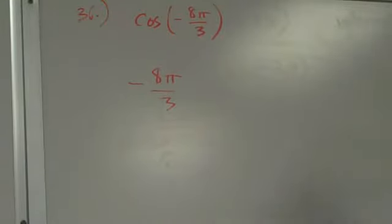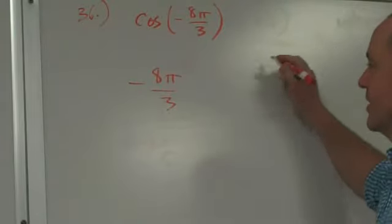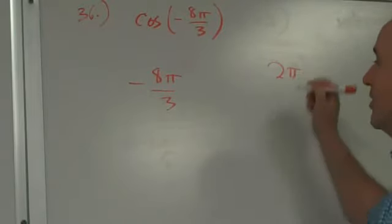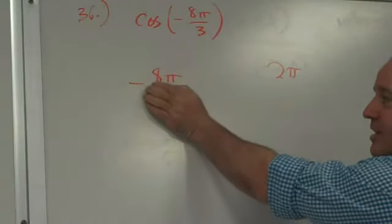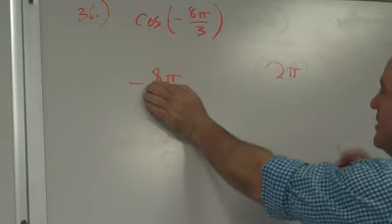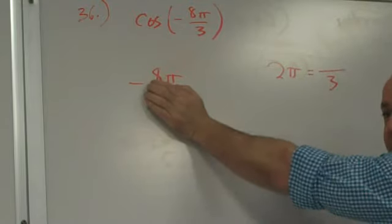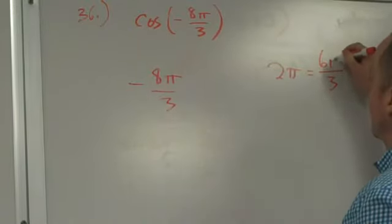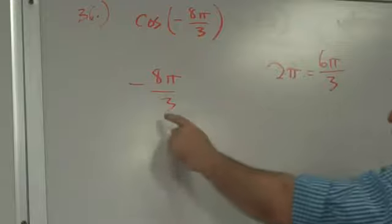Negative 8 pi over 3 is how many times around the unit circle? Student: Four? Wait a minute. Two is once around. Teacher: 2 pi is once around. 4 pi is twice around. Student: It's less than that. Teacher: Make 2 pi into a fraction over 3. Oh, wait a minute. This is going to be 6 pi over 3. It's only once around. Yep. So, 6 pi over 3 is once around. One and a half.